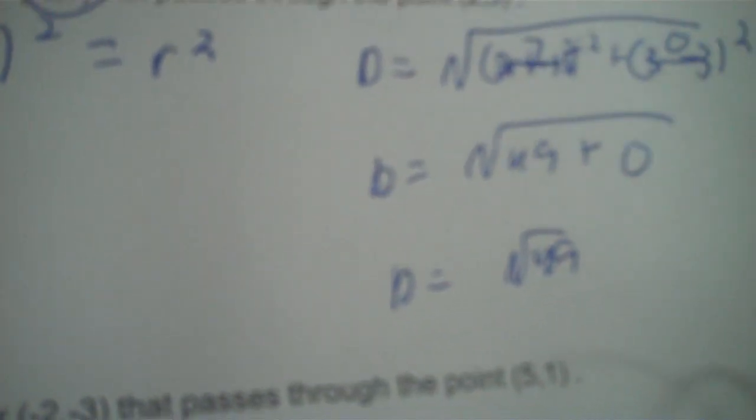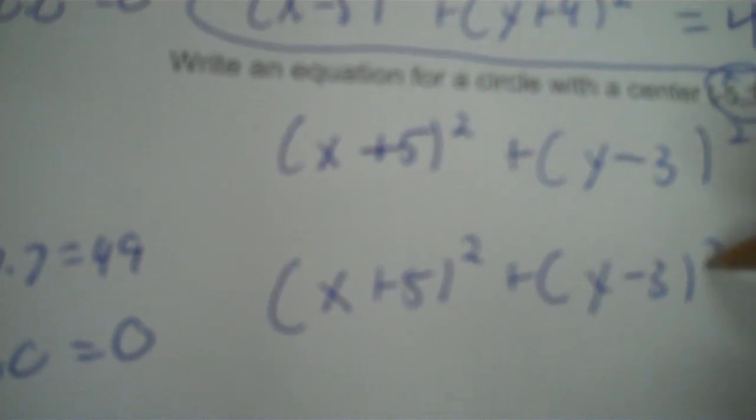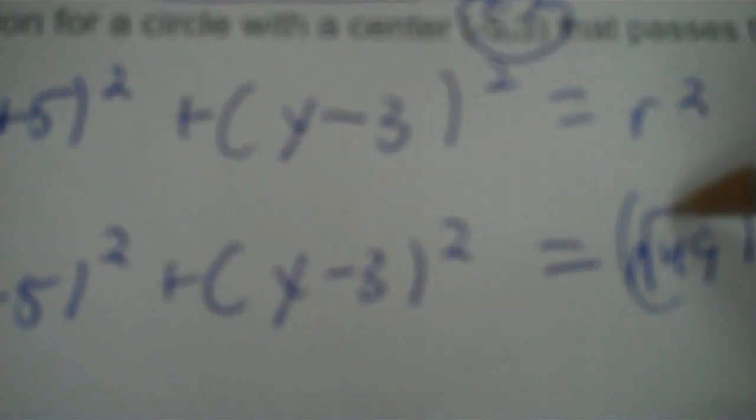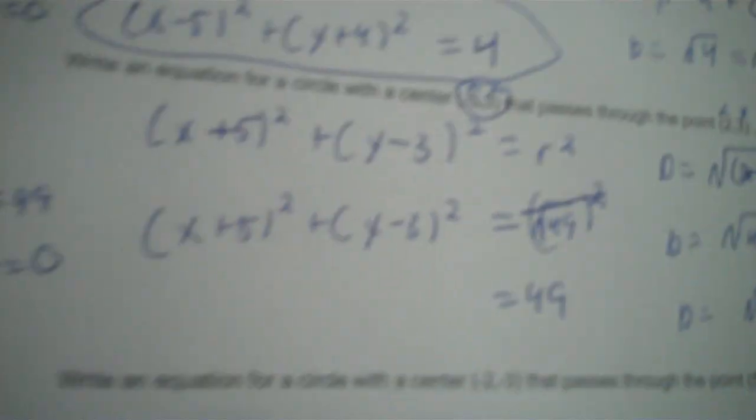Don't write 7 — well, you can, but it's kind of unnecessary. Because that's going to end up just being 49. That's your distance, and that's also equal to your radius, because the radius is the distance between the center and one of the points on the circle. So put in the square root of 49, but the square root and the second power cancel, and we just have the number 49.